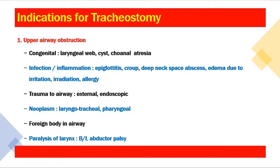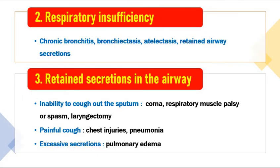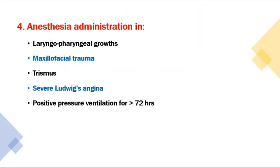Chronic aspiration in cases of bilateral abductor paralysis can also be an indication. The second indication is respiratory insufficiency in conditions like chronic bronchitis, bronchiectasis, atelectasis, and retained airway secretions. The third is retained secretions — inability to cough such as in coma, respiratory muscle palsy, laryngectomy, painful cough in chest injuries, or excessive secretions in pulmonary edema. The fourth indication is anesthesia administration in laryngopharyngeal growths, maxillofacial trauma, trismus, severe Ludwig's angina, and positive pressure ventilation for more than 72 hours.